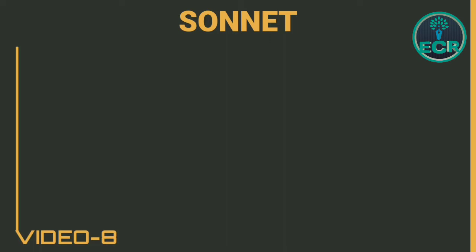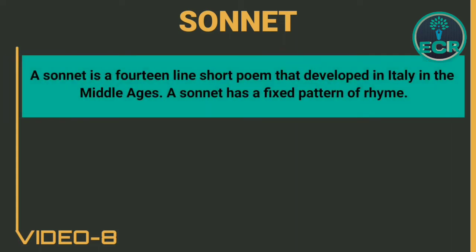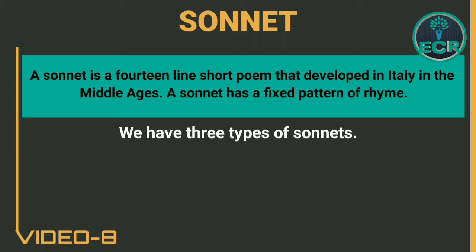In this video we shall discuss sonnet and its different types. A sonnet is a 14-line short poem that developed in Italy in the Middle Ages. A sonnet has a fixed pattern of rhyme. We have three types of sonnets: Petrarchan, Spenserian, and Shakespearean.